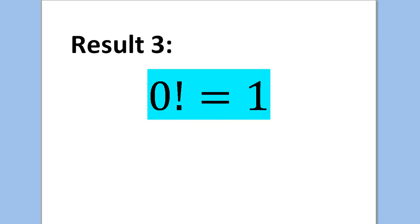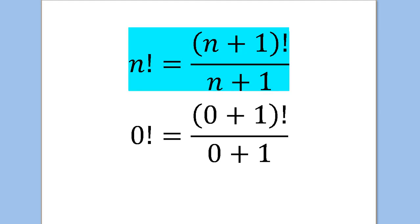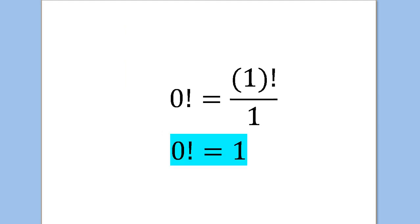Result 3: 0 factorial equals 1. Again, you'll need to memorize that. Proof: we use Results 1 and 2. From Result 1, n factorial equals n plus 1 factorial over n plus 1. Plugging in n equals 0, we get 0 factorial equals 1 factorial over 1. Since we just proved that 1 factorial equals 1, it follows that 0 factorial equals 1.